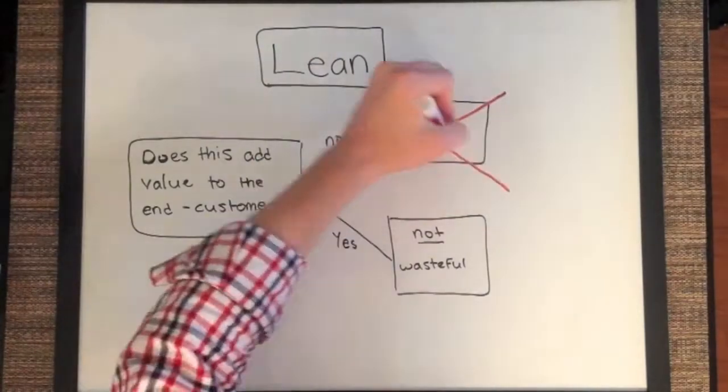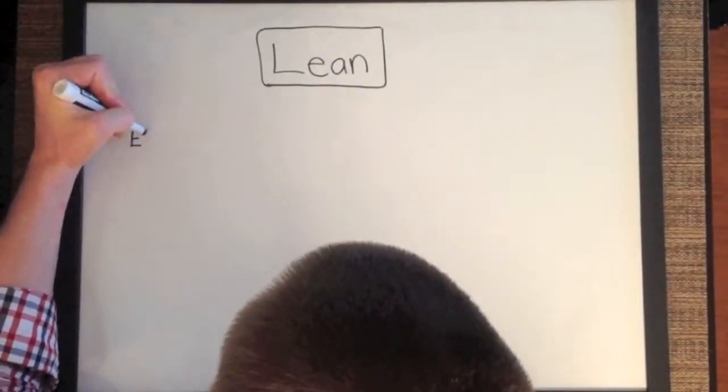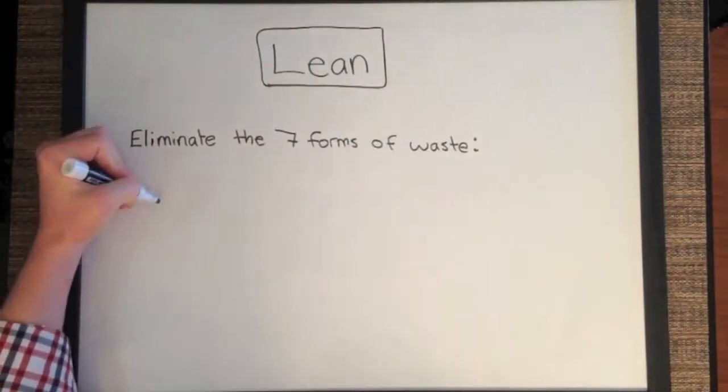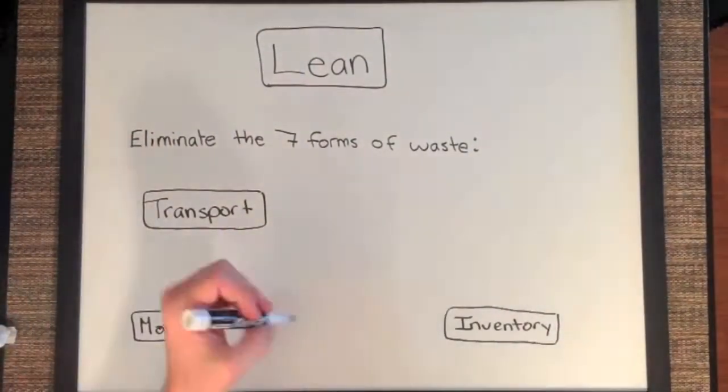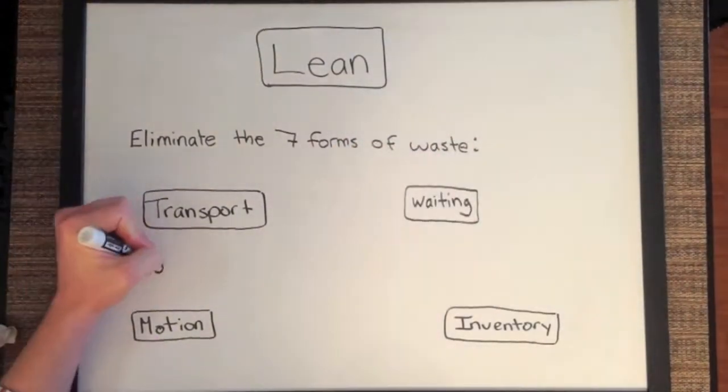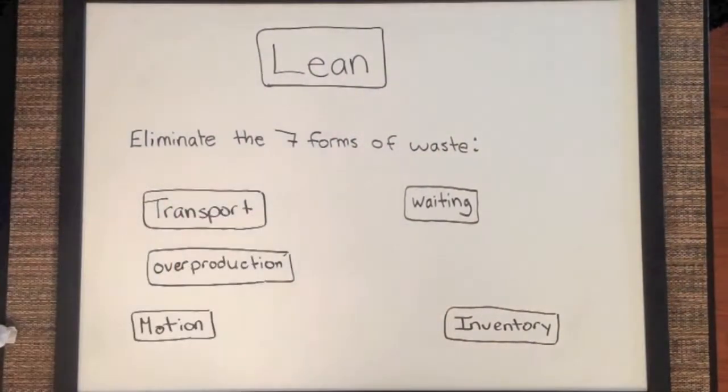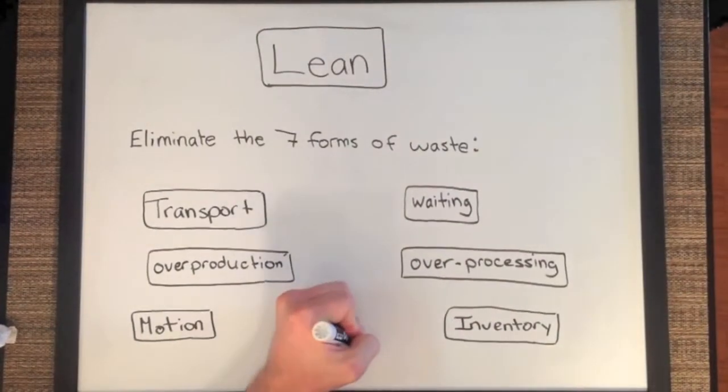A Lean Manufacturer tries to remove wasteful activities by eliminating the seven forms of waste. They are Transport, Inventory, Motion, Waiting, Overproduction, Overprocessing, and Defects.